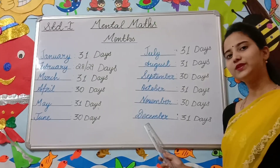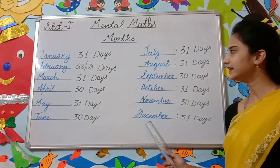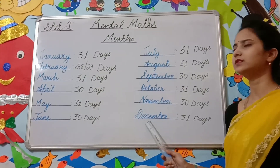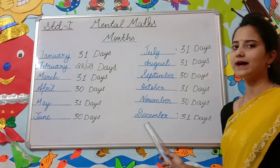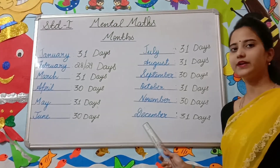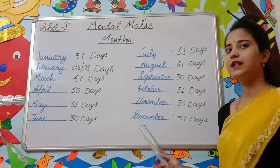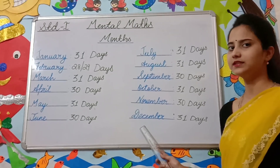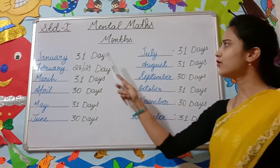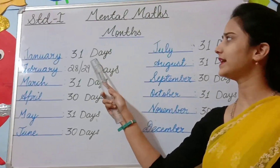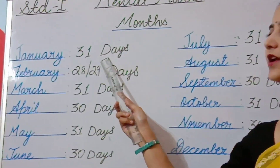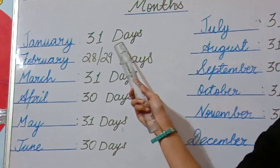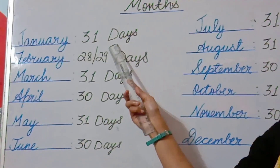Students, these are the 12 months of the year. Now, let us learn how many days are there in each month.